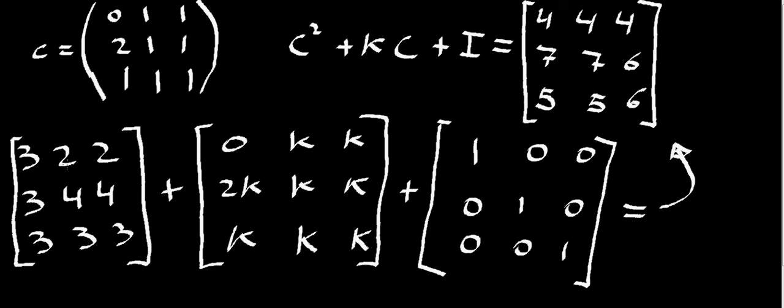So element 1, 2, this 2 value here, plus element 1, 2 on the second matrix, which is k, plus element 1, 2 on this one here, which is 0, is equal to 4. That means that k is equal to 4 minus 2, which is 2. This is the solution, k equals 2.